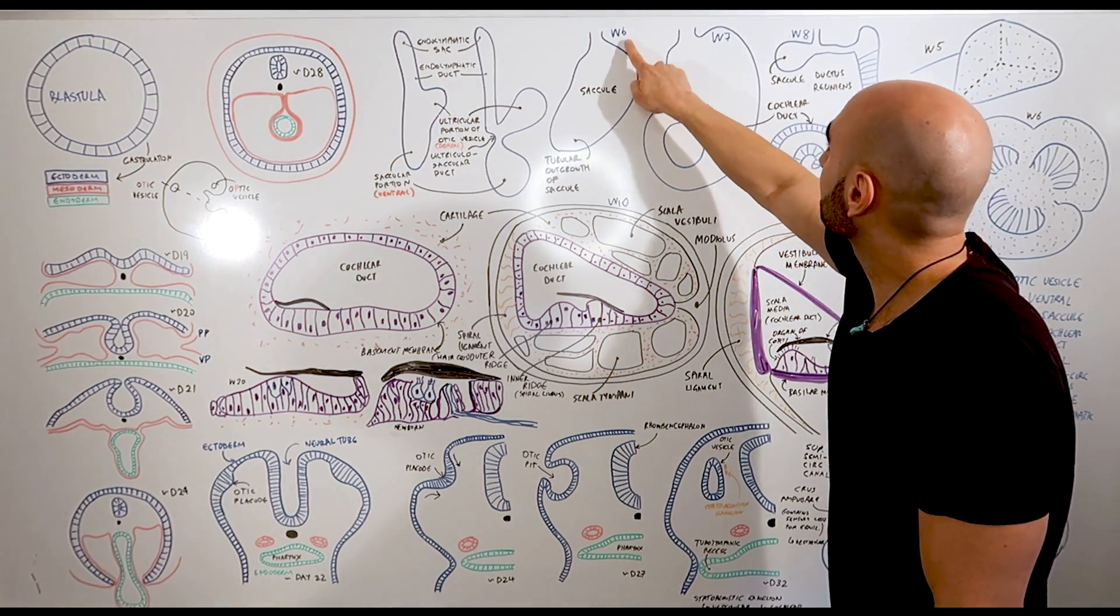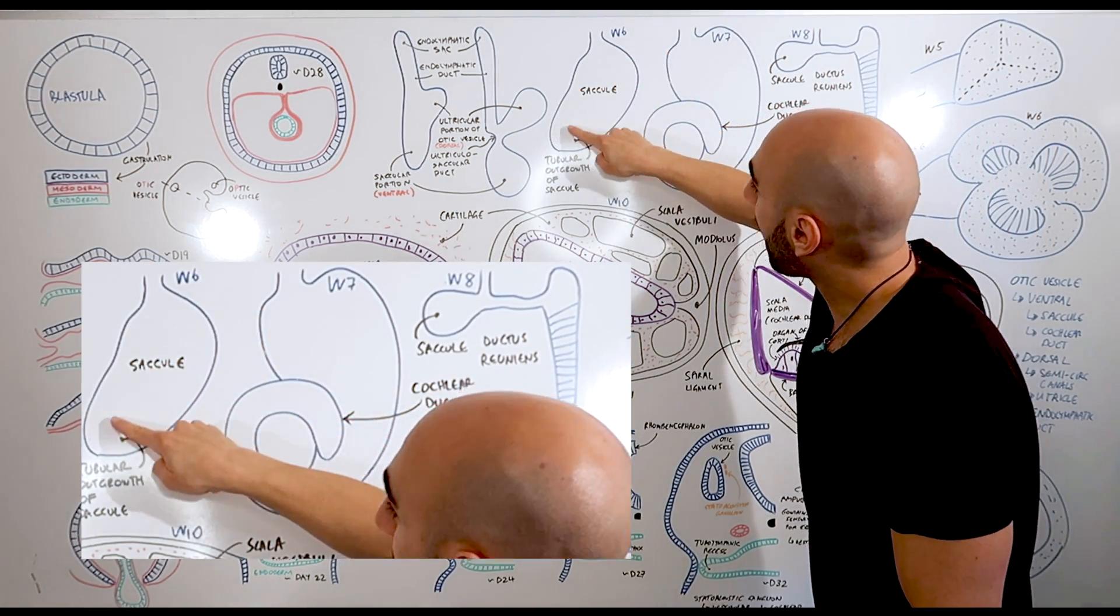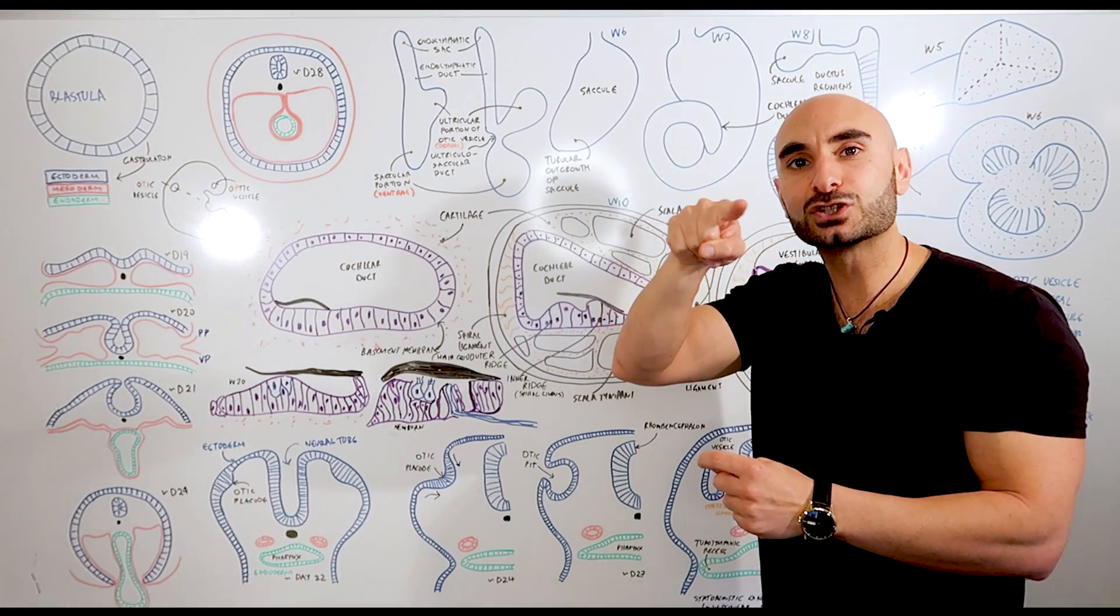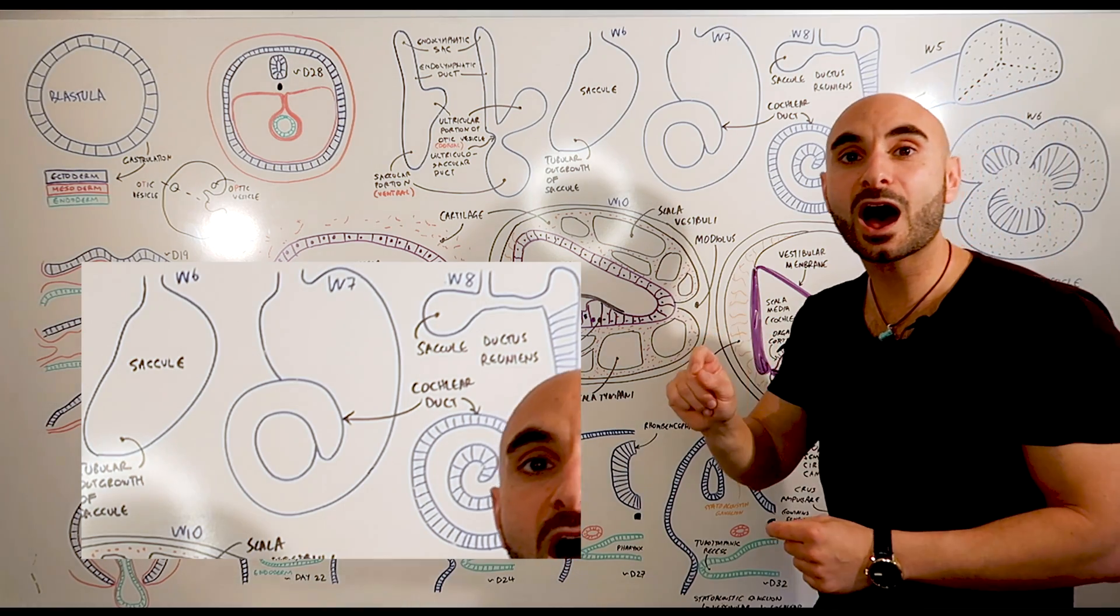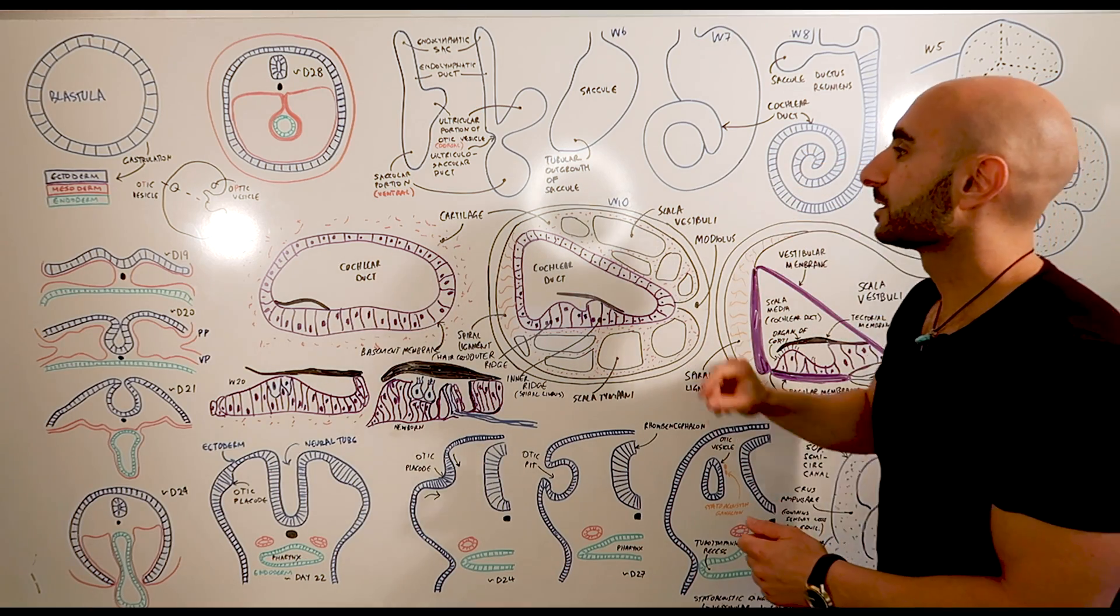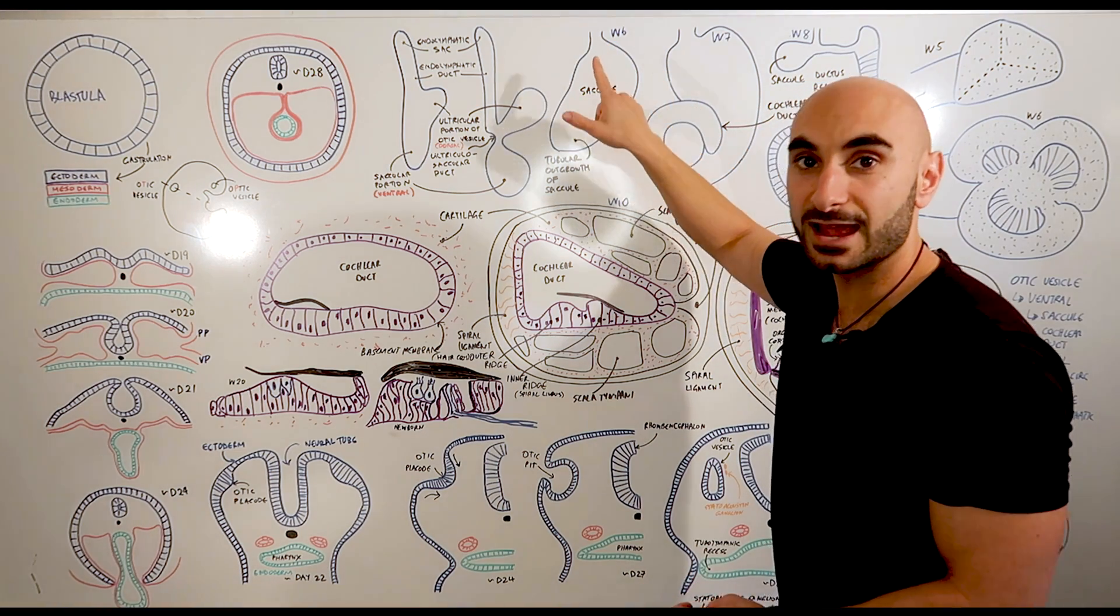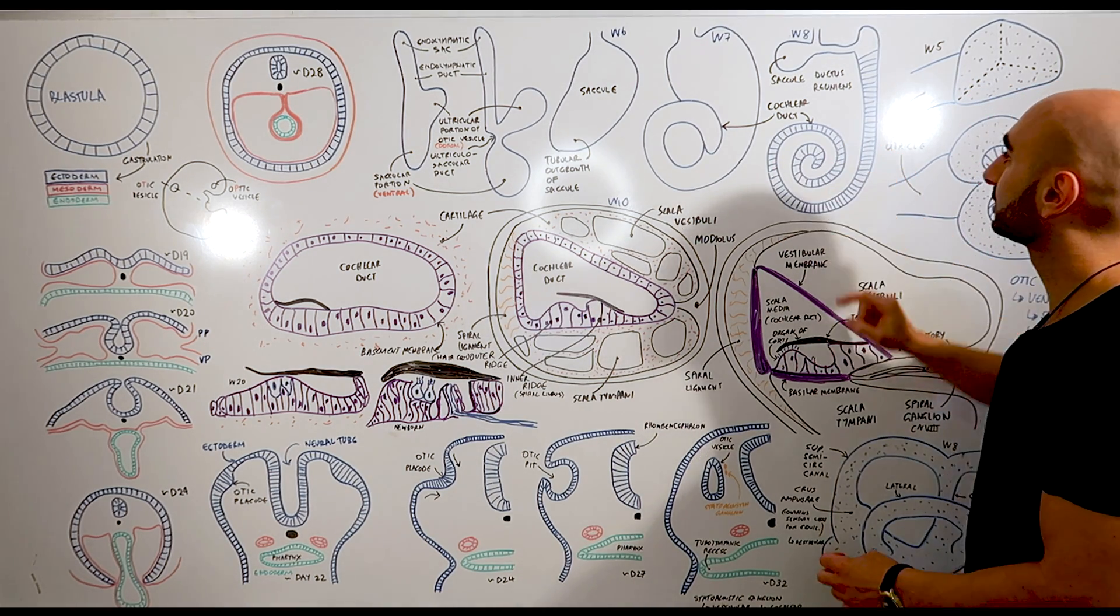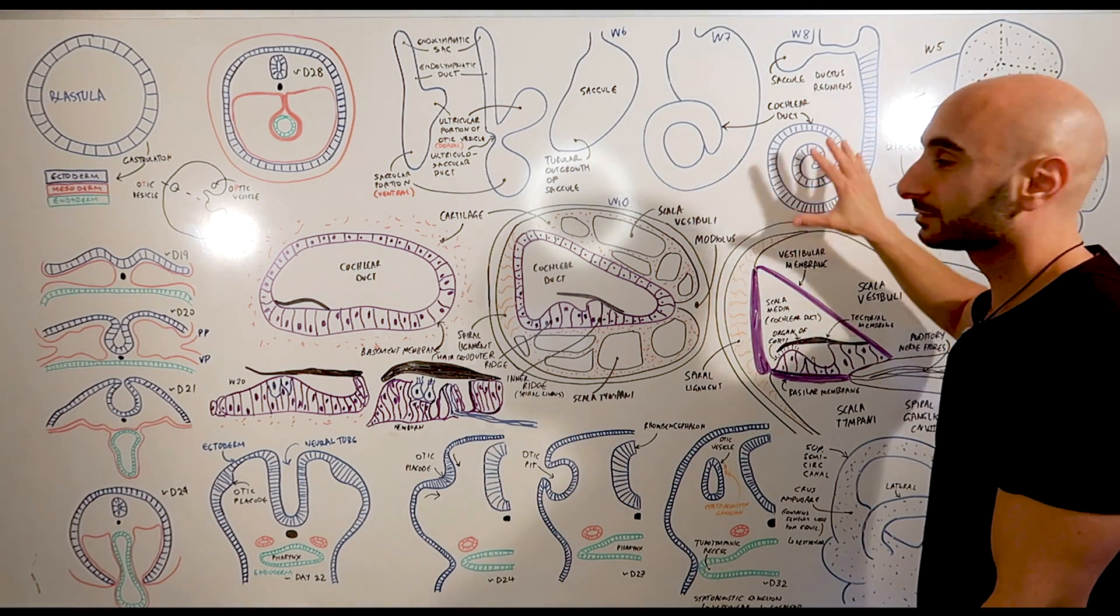So what happens between week six to week eight is that the saccule - well, the tubular outgrowth of the saccule will form a coil. It continues to dig into this mesenchyme that we just spoke about, forming a coil. And by week eight, you'll have two and a half coils and the cochlear duct is formed. So the cochlear duct is formed from a tubular outgrowth of the saccule from week six and is completed by week eight, where you'll have two and a half turns of the cochlear duct. That is essentially how the cochlear duct is formed.